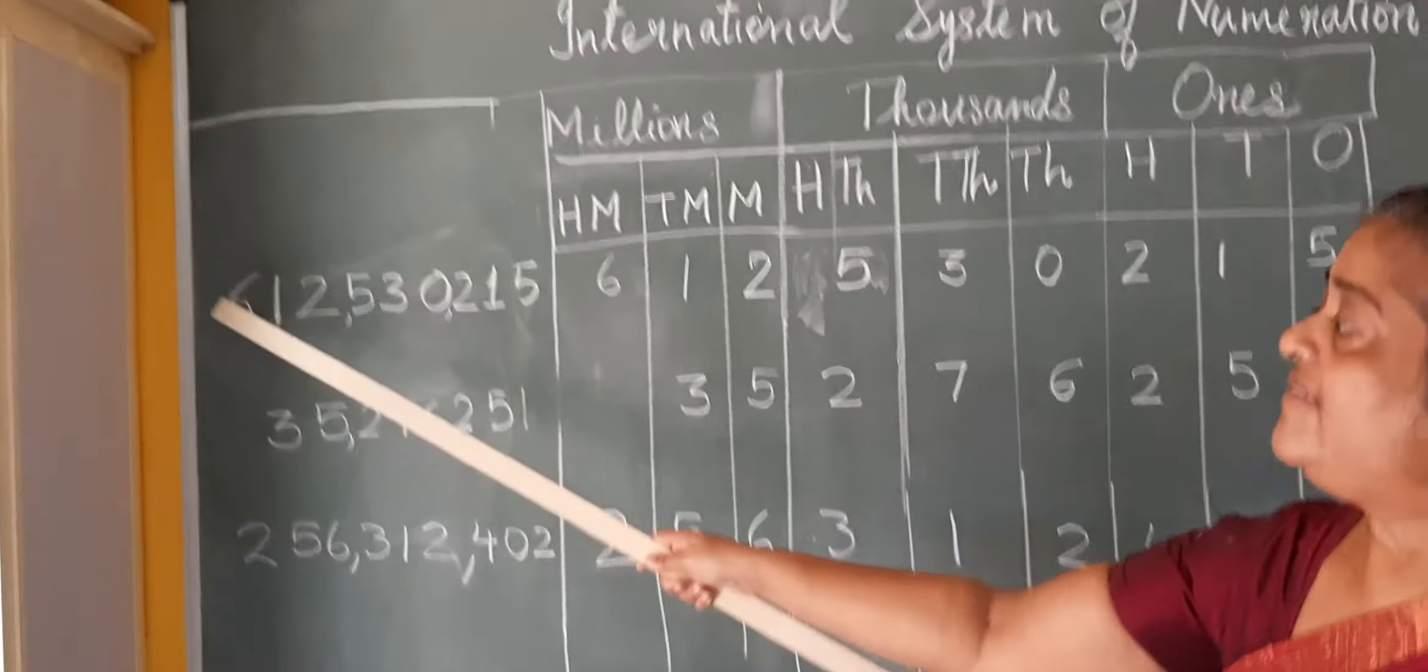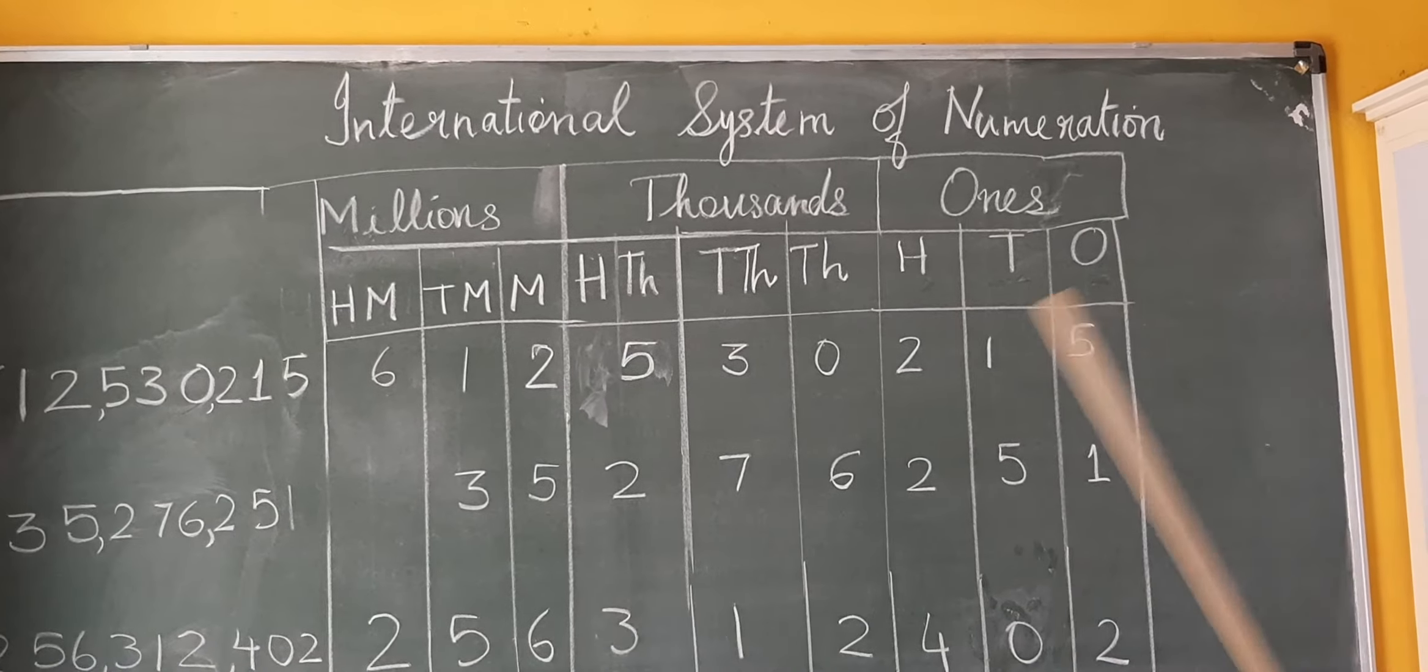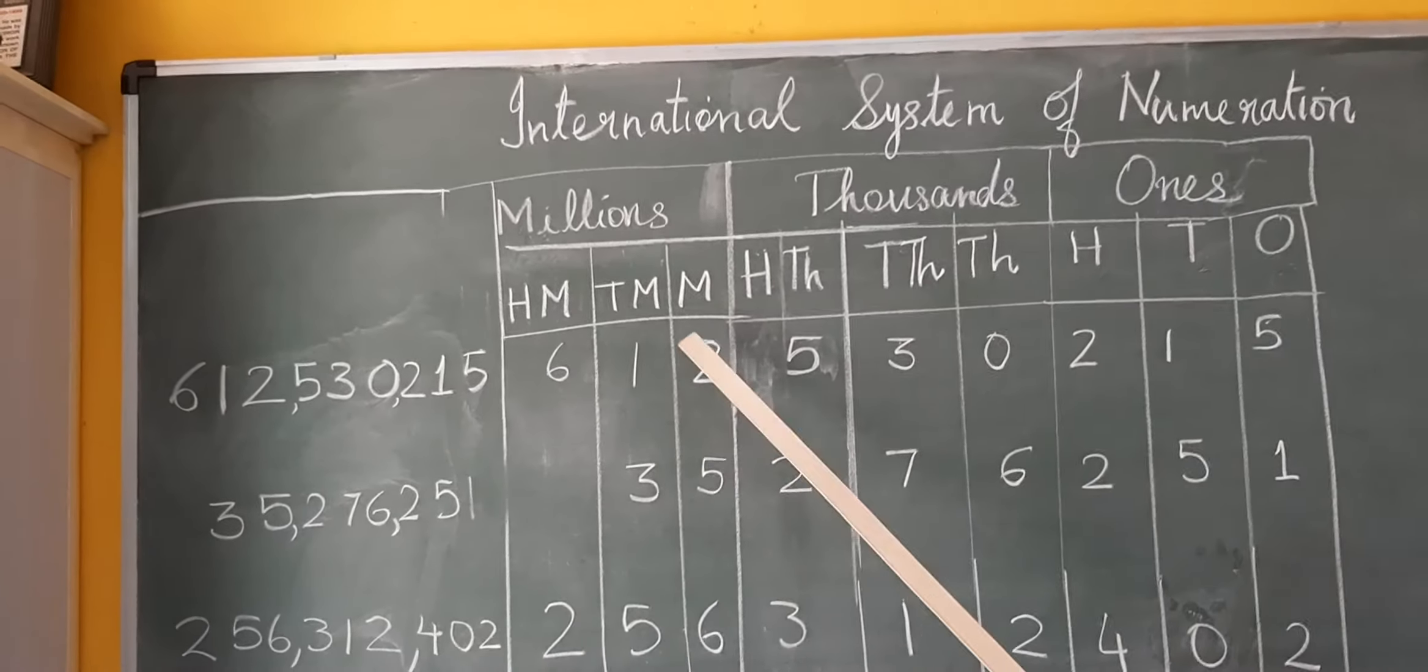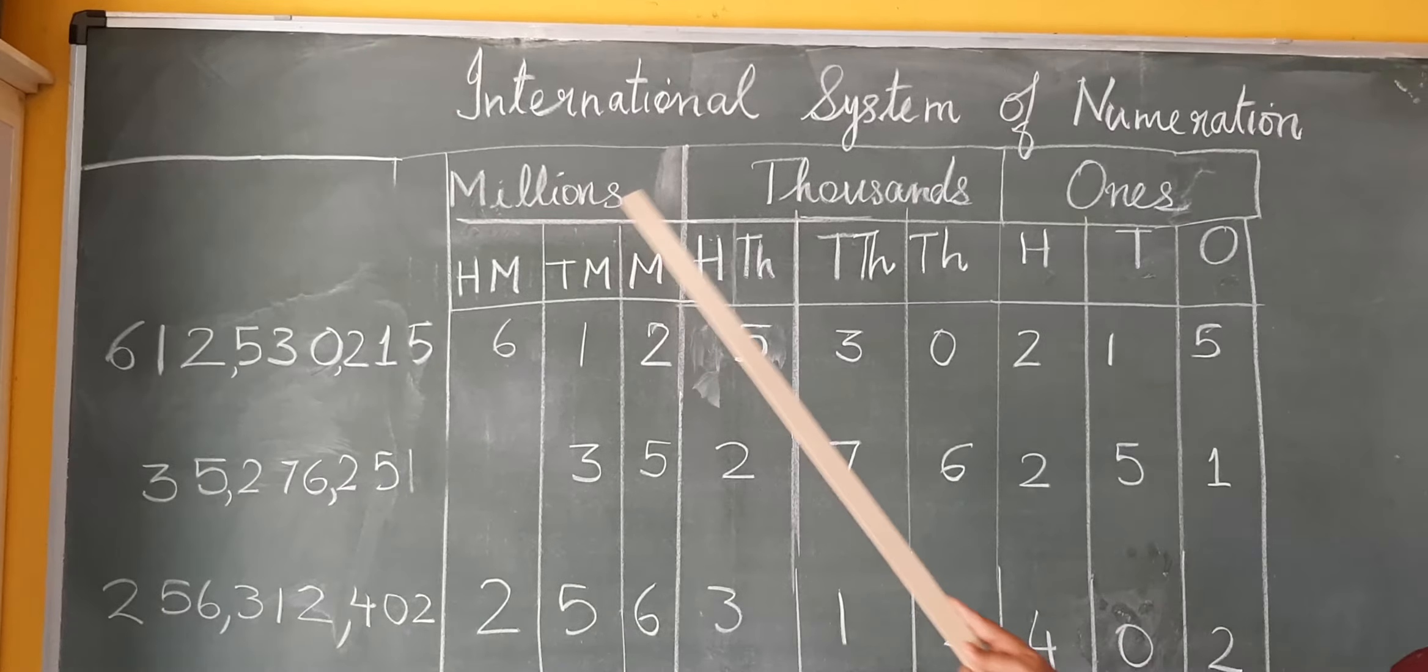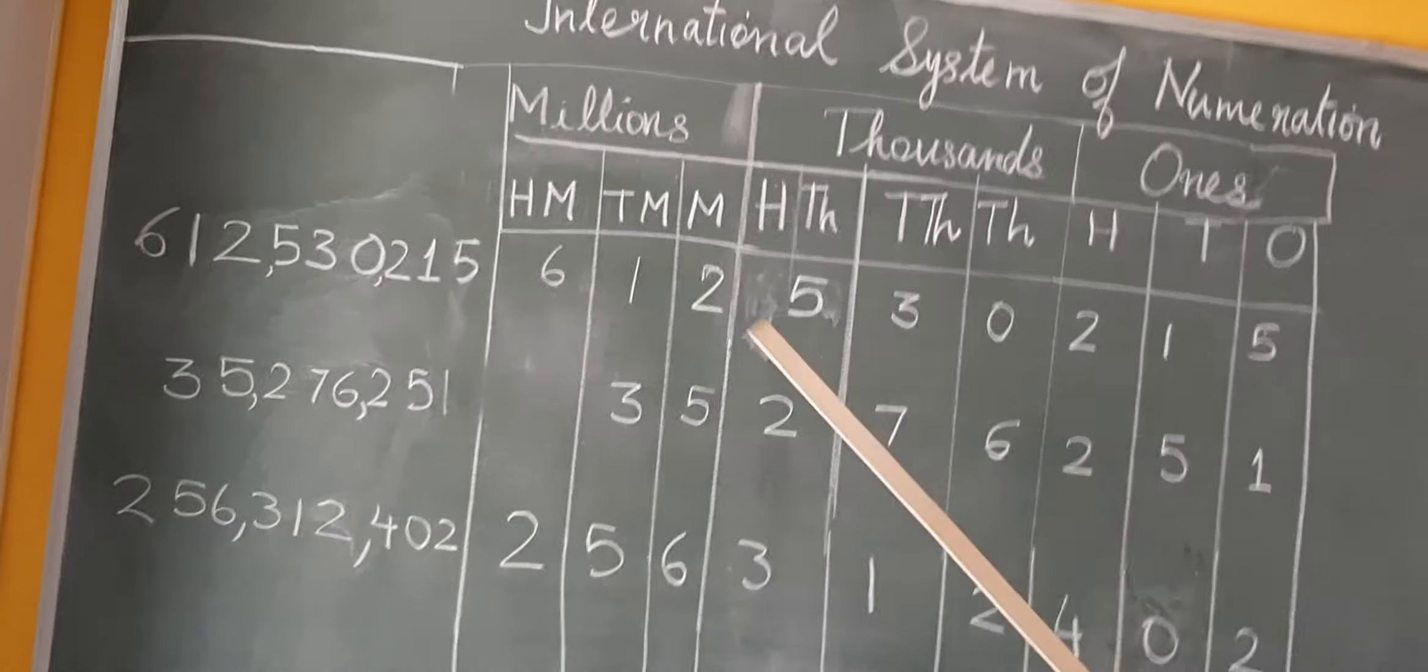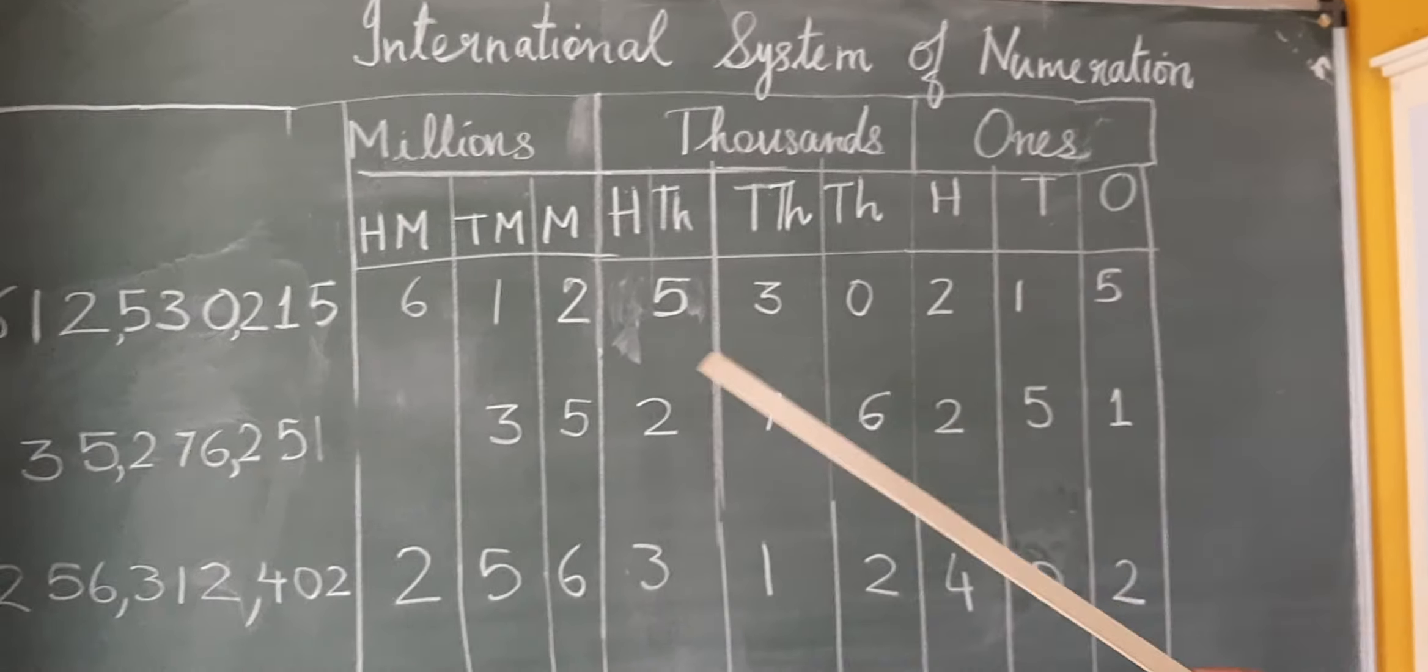We have to read three together. When I have this number, I put it into the proper place value: 612530215. When we read this, look at the millions period. What are the numbers here? 612. We read these three together: 612 million, then 530 thousand, then 215.